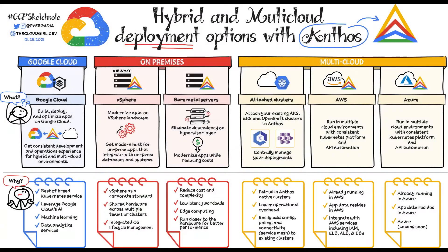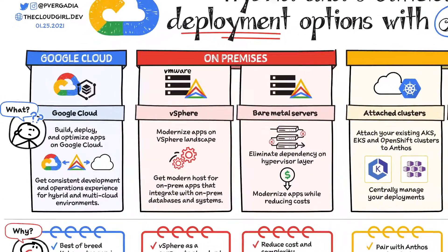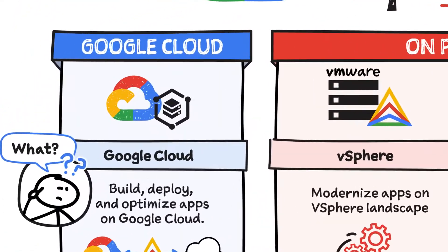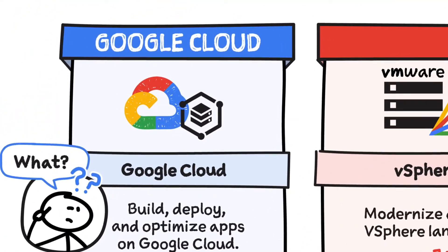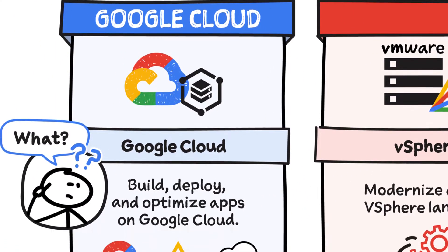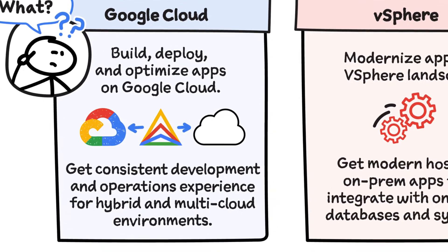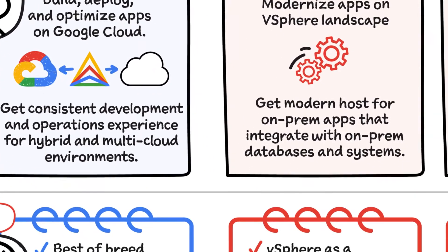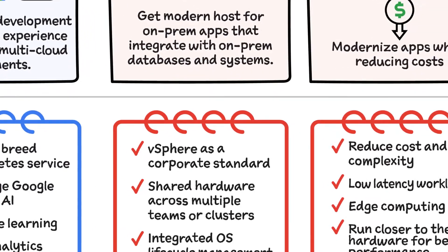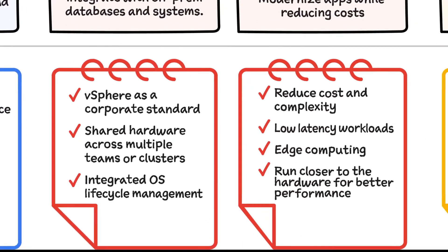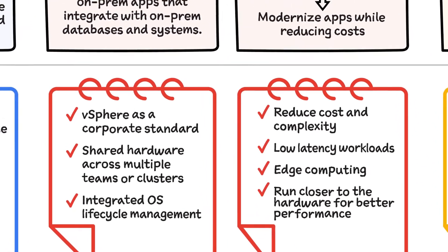If you're already using Google Cloud, then use Anthos to build, deploy, and optimize your apps directly on Google Cloud. This provides a consistent development and operations experience for hybrid and multi-cloud environments. This is a great option for cloud-first companies, digital natives, and SaaS providers.